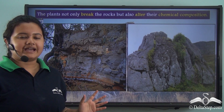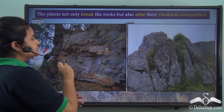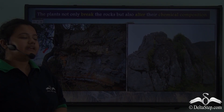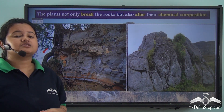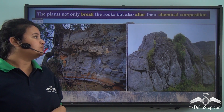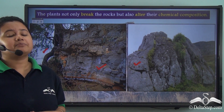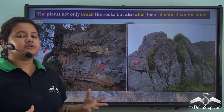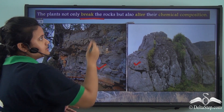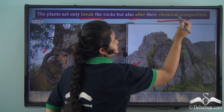Due to the growth of plants, the rocks gradually disintegrate. The roots of plants also release certain chemicals and acids which react with the minerals present in the rocks and make them weaker and more susceptible to weathering. Thus plants not only break the rocks but also alter their chemical composition.